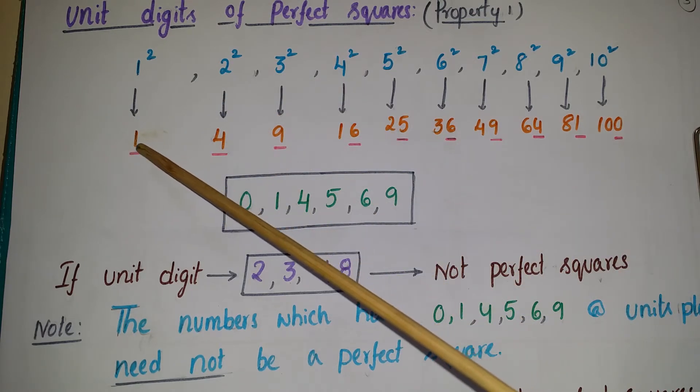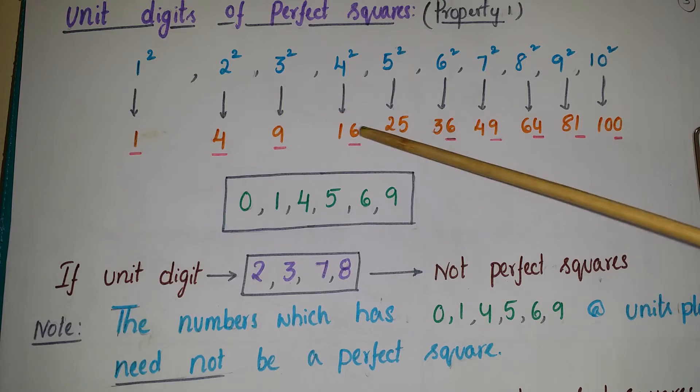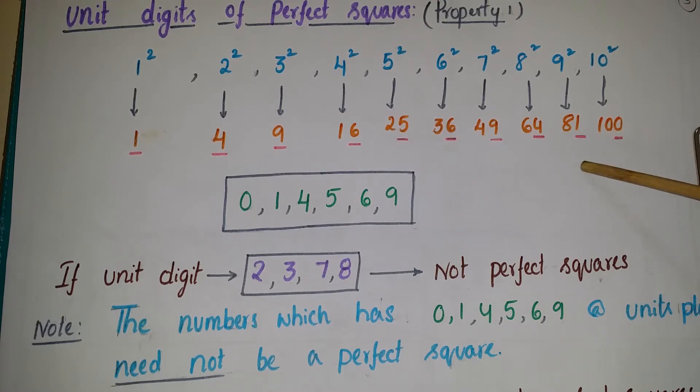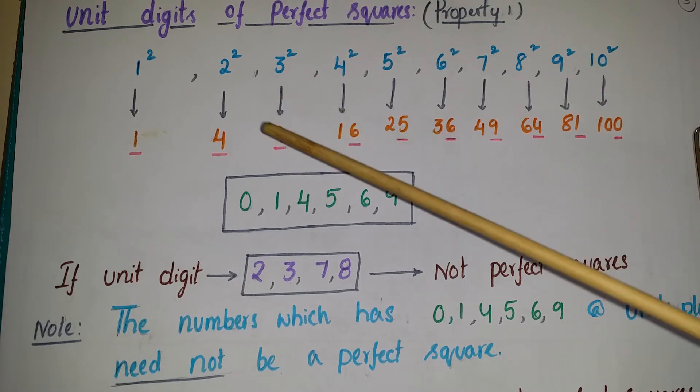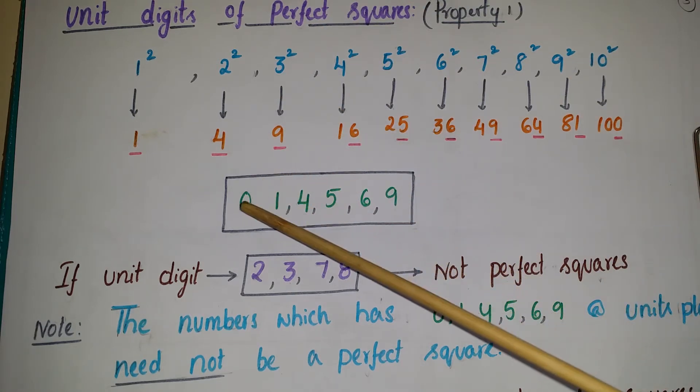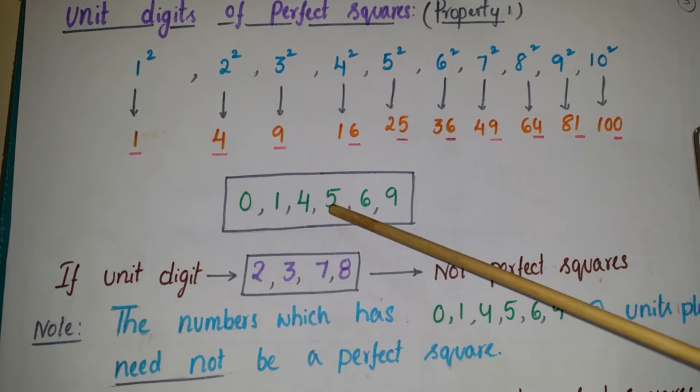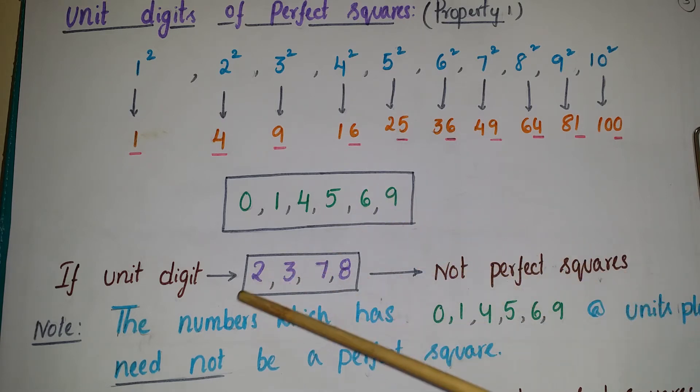The unit digits are 1, 4, 9, here 6, 5, 6, 9, 4, 1, and 0. So all the perfect squares have the unit digits of 0, 1, 4, 5, 6, 9. So if the unit digits are 2, 3, 7, and 8, those are not perfect squares.